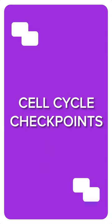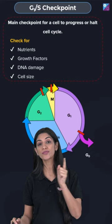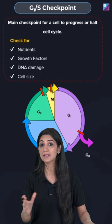Hi kids, let's talk about the cell cycle checkpoints. There are two main checkpoints that happen during the cell cycle. The first one happens after the G1 phase of interphase before the cell enters into the S phase. This checkpoint checks for nutrients, growth factors, DNA damage, and even the cell size.